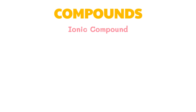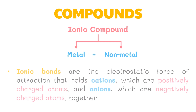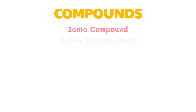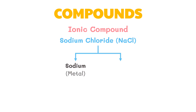Ionic compounds are formed between a metal and a non-metal. The chemical combination between the two types of elements results in the formation of ionic bonds between the atoms. Ionic bonds are the electrostatic force of attraction that hold cations, which are positively charged atoms, and anions, which are negatively charged atoms, together. Sodium chloride, or table salt, is an example of an ionic compound — it is the combination of sodium, which is a metal, and chlorine, a non-metal.